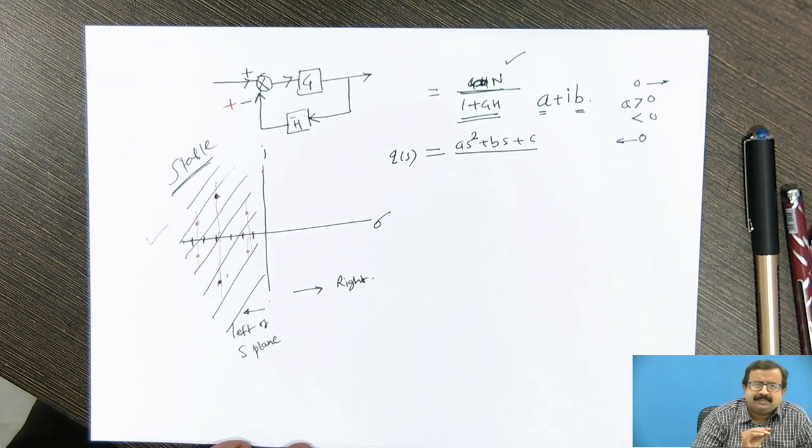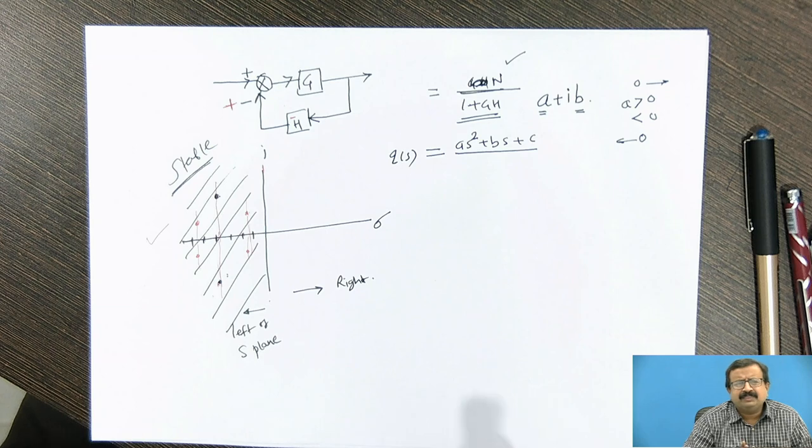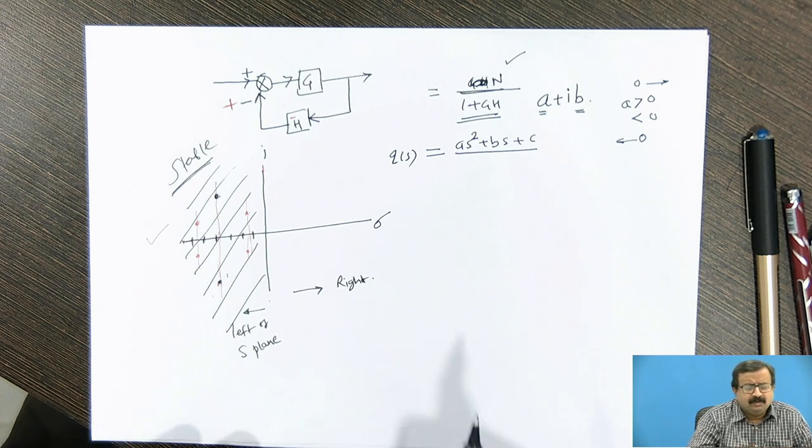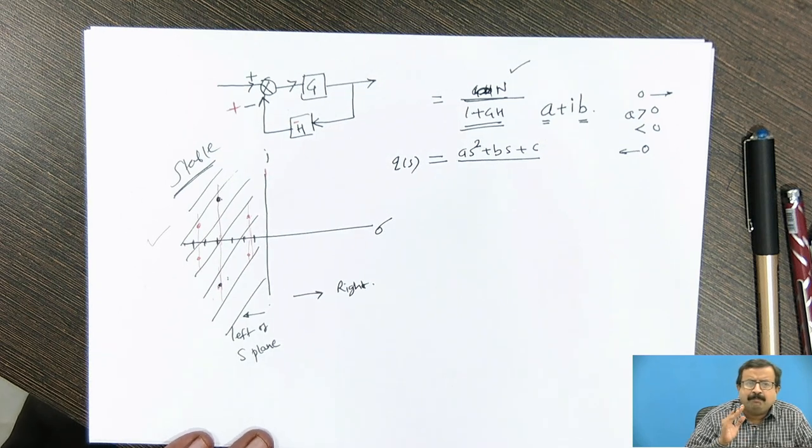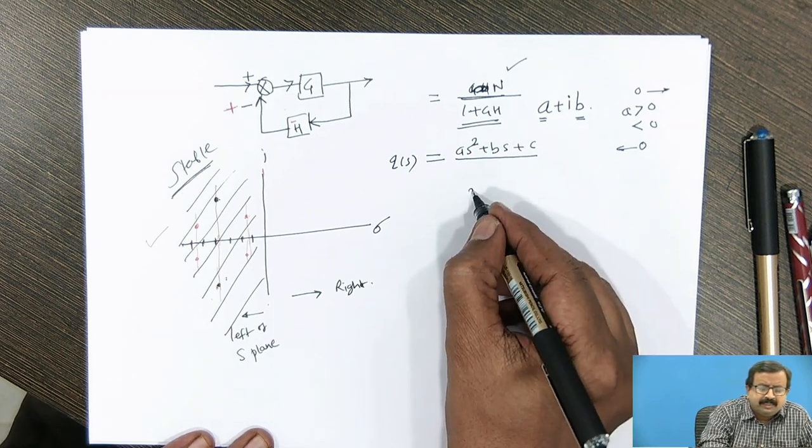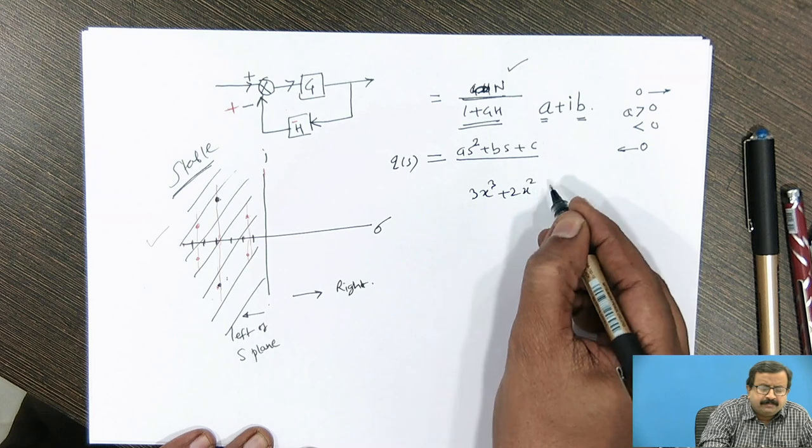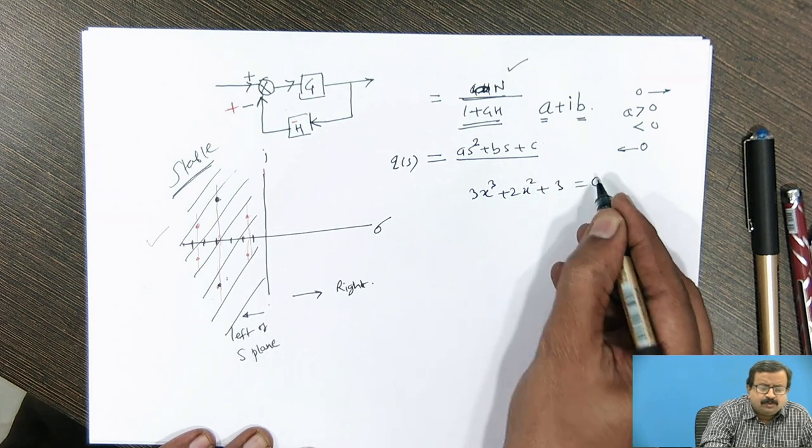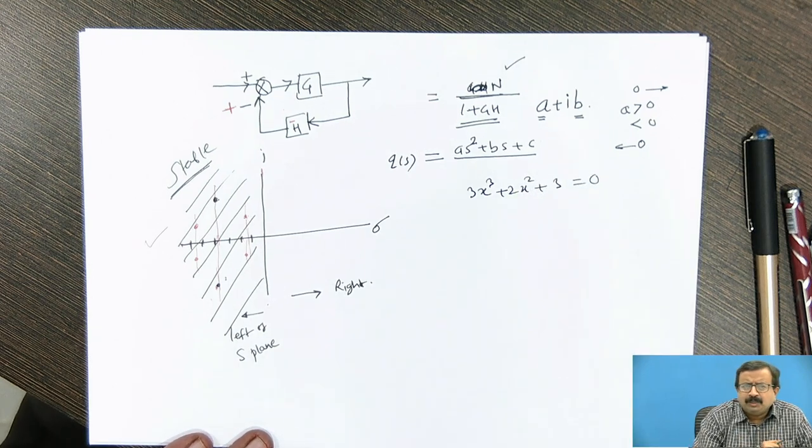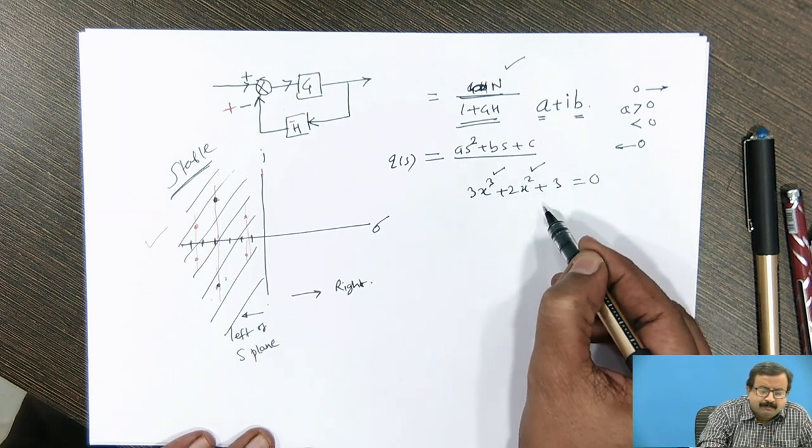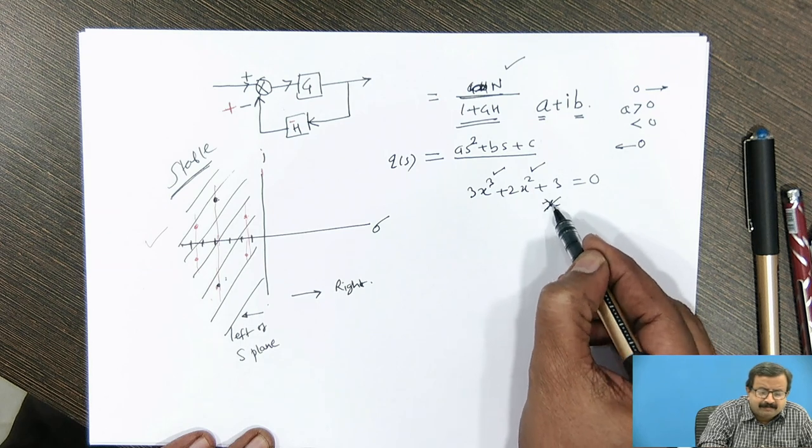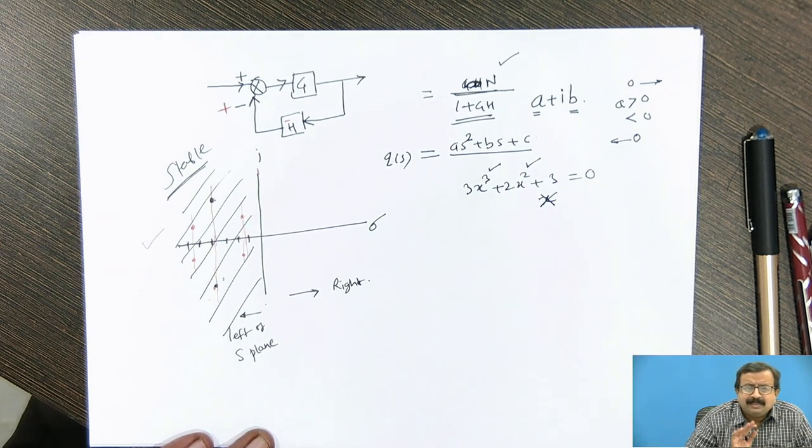The stability criteria require certain things which are mathematical in nature. It says that whatever the polynomial you have, it must be complete polynomial. What is the meaning of complete polynomial? Suppose I write a polynomial 3x cube plus 2x square plus 3 is equal to 0. The problem with this is that the x cube term is present, x square term is present, but term in x is absent. So when the term in x is absent, that system can never be a stable system.